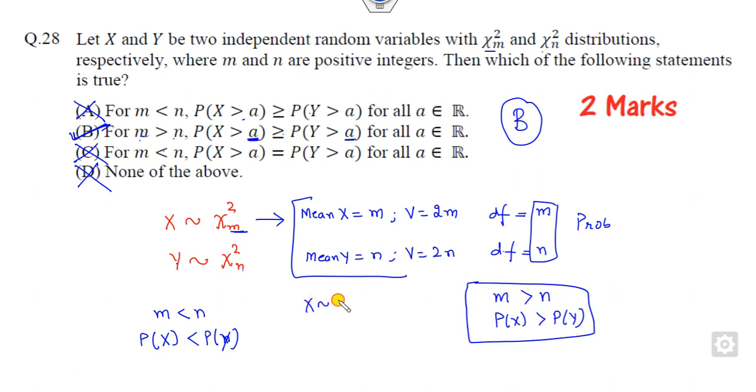For example, if X follows chi-square distribution with 3 degrees of freedom and Y is chi-square with 4 degrees of freedom, then which option is correct? Since 3 is less than 4, the probability of X is less than the probability of Y. This is the simple rule behind chi-square distribution.